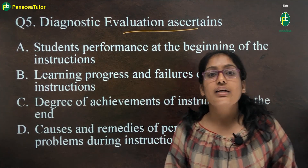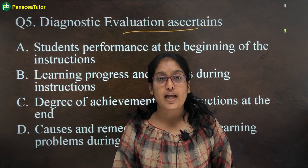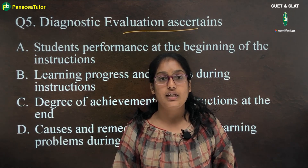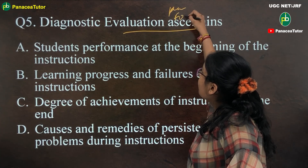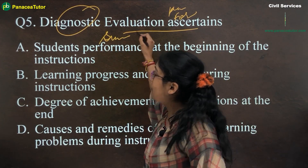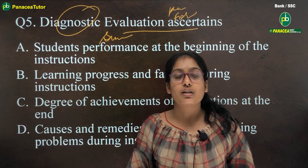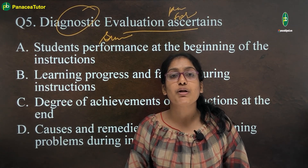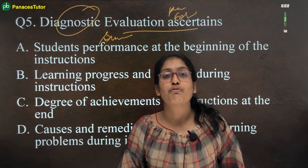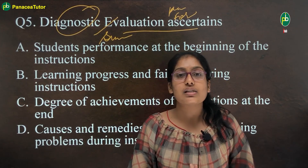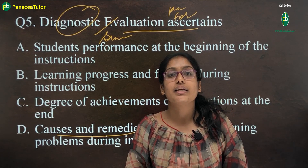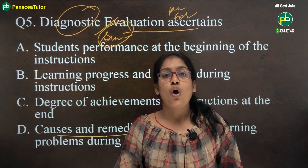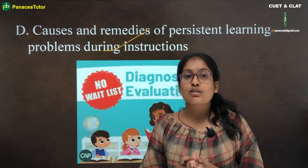The next question is: what does diagnostic evaluation ascertain? When we talk about evaluation based on functions or phases of instruction, there are mainly four types: placement evaluation, formative evaluation, diagnostic evaluation, and summative evaluation. Placement evaluation is done before the course. Formative evaluation is assessment for learning — ongoing and continuous. Diagnostic evaluation tells us about causes and remedies and what remedial action should be taken. Summative evaluation is done at the end of the course. So the correct answer is option D: causes and remedies of persistent learning problems during instruction.